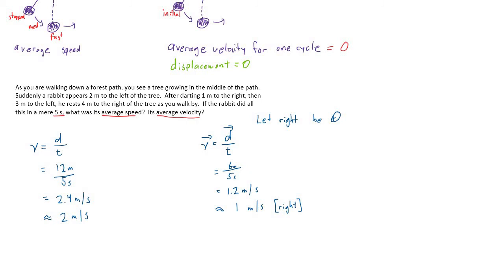It ignores that the rabbit darted left, then right, then left, then right. It just considers that the rabbit took five seconds to go from starting position to final position.